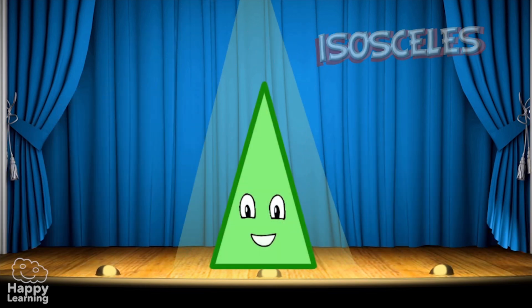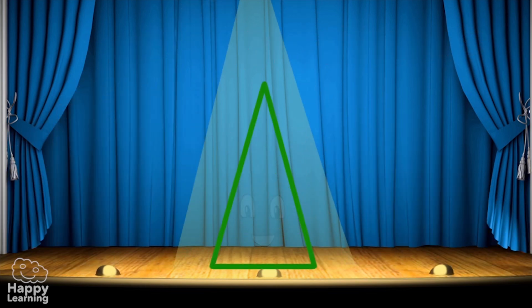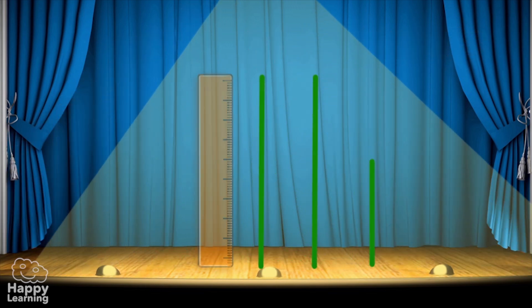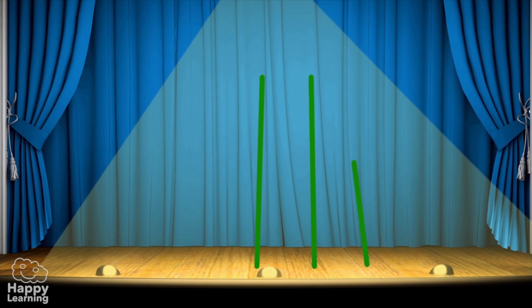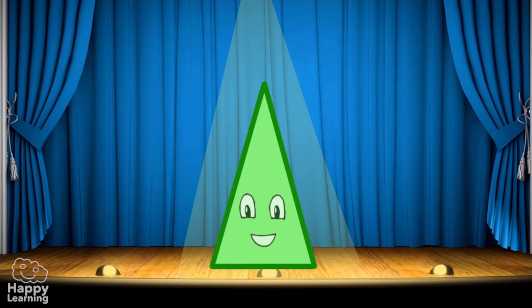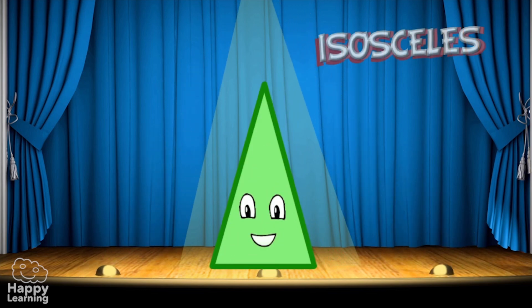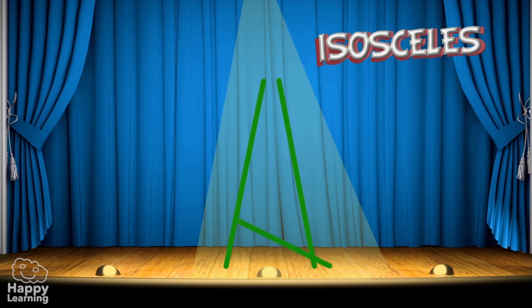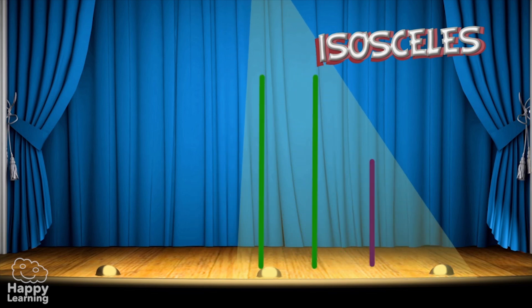In an isosceles triangle two sides are the same length and one is different. See how it's formed? Great! So this is an isosceles triangle with two equal sides and one different one.